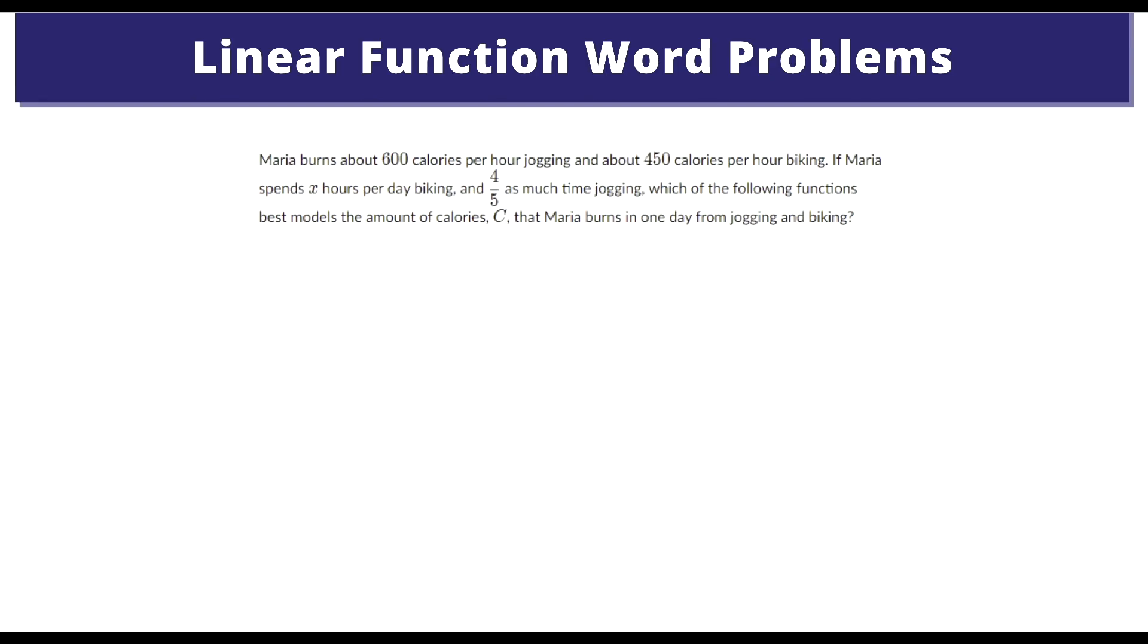Alright. Maria burns 600 calories per hour jogging and about 450 calories per hour biking. If Maria spends x hours per day biking and 4/5 as much time jogging, which of the following functions best models the amount of calories C that Maria burns in one day from her jogging and biking?